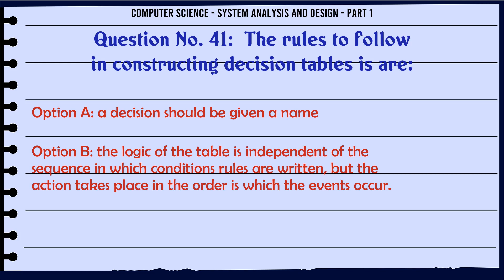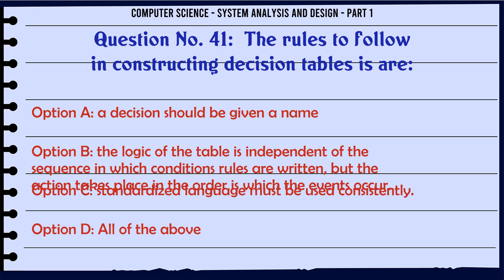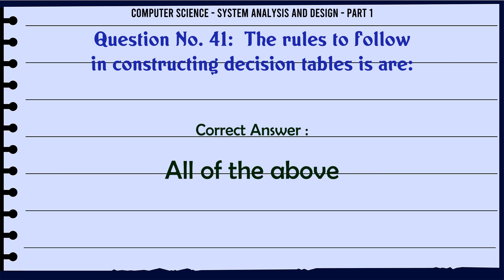The rules to follow in constructing decision tables are: A. A decision should be given a name. B. The logic of the table is independent of the sequence in which condition rules are written, but the action takes place in the order in which events occur. C. Standardized language must be used consistently. D. All of the above.